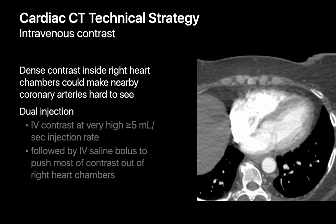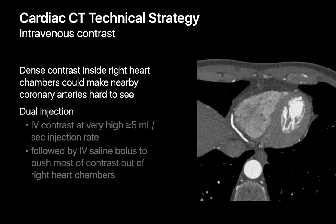Finally, the way we handle the injection of intravenous contrast is important. If you look at routine enhanced chest CTs, you'll often see relatively dense contrast in the right heart chambers. That dense contrast can cause a lot of artifact that can make the nearby coronary arteries hard to see. So for coronary CTAs, we often like to do a dual injection technique where we inject a slug of intravenous contrast at a very high injection rate followed by a saline chaser bolus to push the dense contrast out of the right heart chambers.